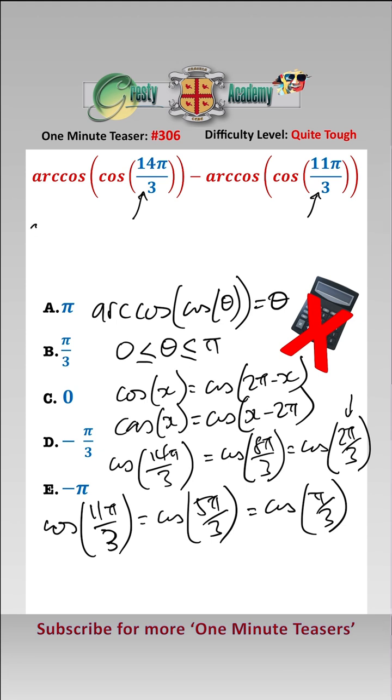So now we have them in the right form and we can rewrite this as arccos of cos of 2 pi over 3 minus arccos of cos of pi over 3.